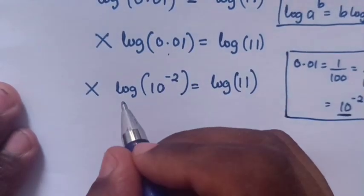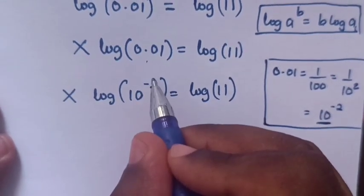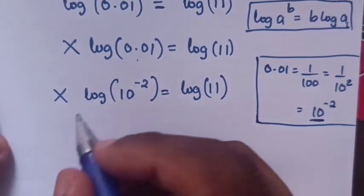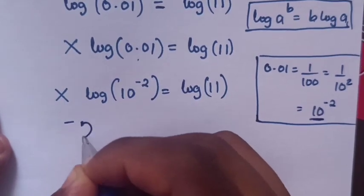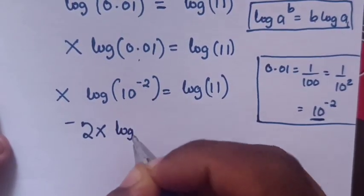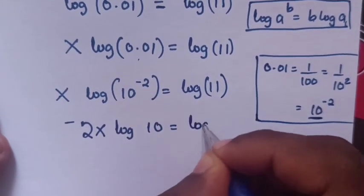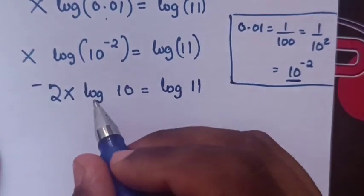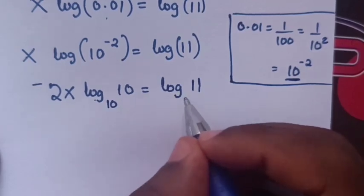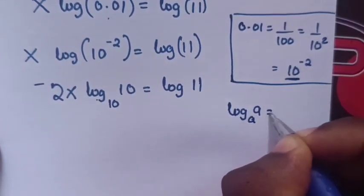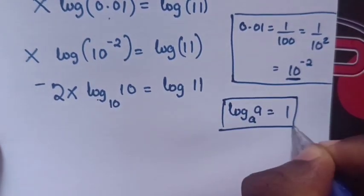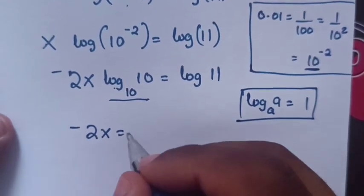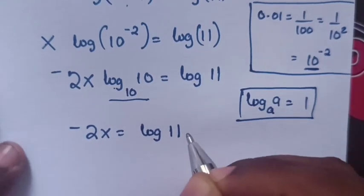Then, the power of -2 will move to the front, same as b in the rule. So it becomes -2·x·log(10) = log(11). Now, since this is log base 10, and log_a(a) = 1, we have log_10(10) = 1. So it becomes -2x = log(11).